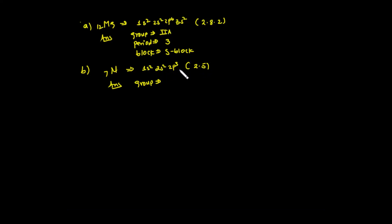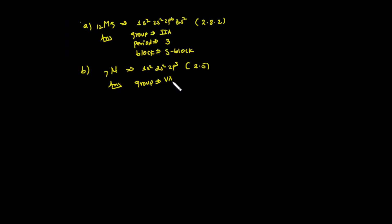The main energy levels are used to determine the period. For representative elements in s-block and p-block, you can identify the group. For example, if you have a group in s-block, you see the representative element. The representative element is in the main group — group A. This is Roman numeral 5A. This group is 1B block.